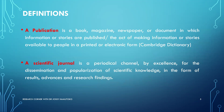What is a publication? A publication can be a book, magazine, newspaper, or document in which information or stories are published — or the act of making information available to people in printed or electronic form. Most of us are familiar with the journal publication. A scientific journal is a periodical publication — meaning it occurs at regular frequencies, perhaps every quarter or month — and its main purpose is to disseminate scientific knowledge in the form of results and research findings.